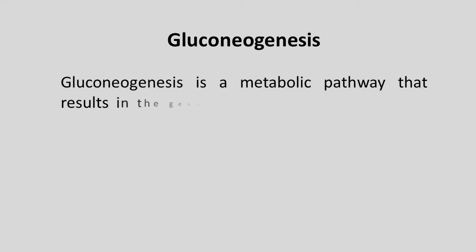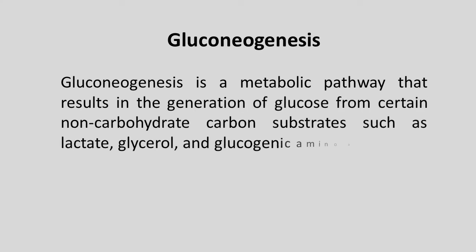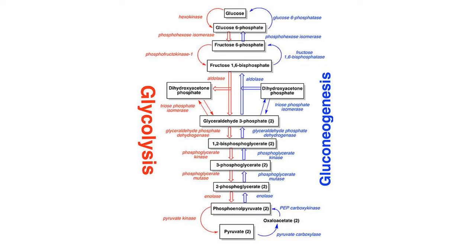Let us now discuss the other alternative metabolic pathway: gluconeogenesis. By definition, gluconeogenesis is the metabolic pathway that results in the generation of glucose from certain non-carbohydrate substrates. Gluconeogenesis is much like glycolysis, only the process occurs in reverse. However, there are exceptions. In glycolysis, there are three highly exergonic steps — steps 1, 3, and 10 — which are also regulatory steps and include the enzymes hexokinase, phosphofructokinase, and pyruvate kinase.